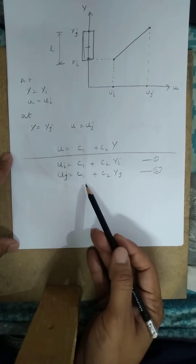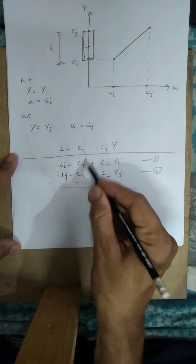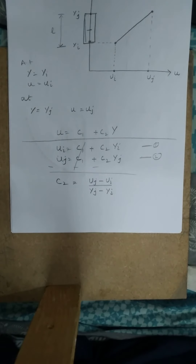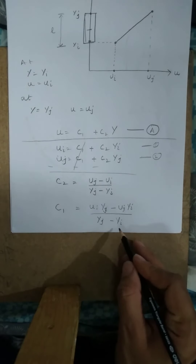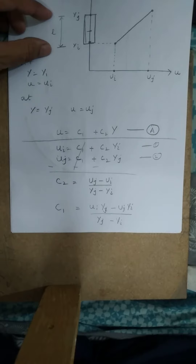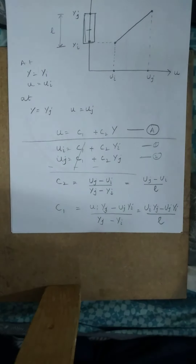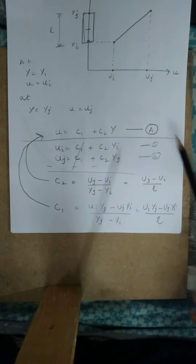Subtracting the equations simultaneously, we extract the value of c2. Substituting c2 back into either equation gives us c1: c1 equals ui times yj minus uj times yi, all over yj minus yi. Now yj minus yi is the length of the element, which we write as L. So we replace yj minus yi with L.